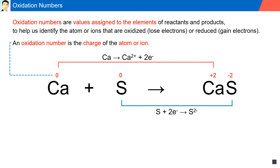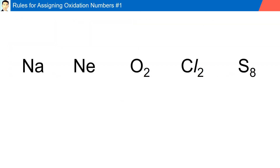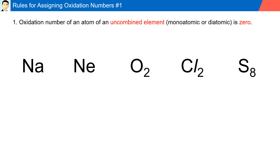Rule number one: the oxidation number for an atom of an uncombined element — monatomic or diatomic — is zero. For example, sodium, a free element, has an oxidation number of zero; neon is zero; oxygen, a diatomic element, is zero; chlorine, another diatomic, is zero. Even sulfur, which is made up of eight atoms, also has an oxidation number of zero.